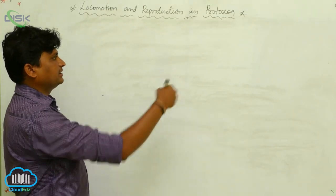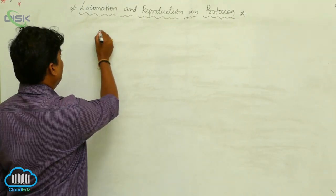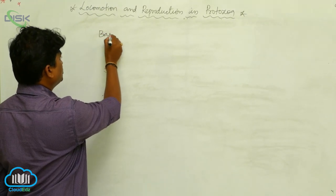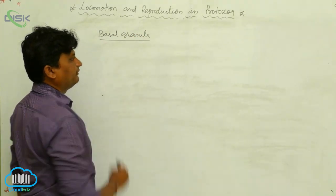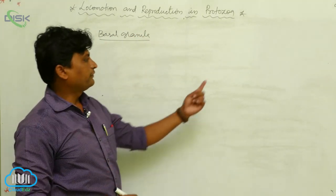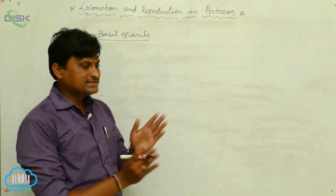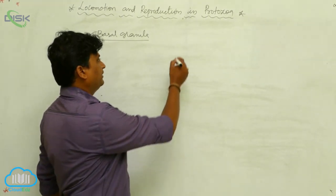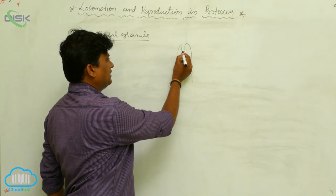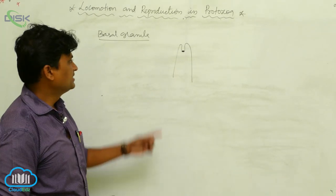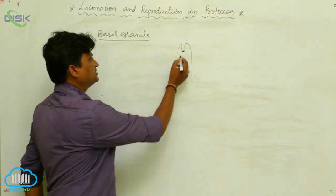Flagella arises from the blepharoplast or basal granule. The basal granule is the starting point of the flagella. We have already seen the nine-plus-two orientation of the ultrastructure of flagella, which arises from the basal granule. For example, in the organism Euglena, the basal granule or blepharoplast is the origin point of the flagella.